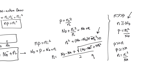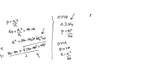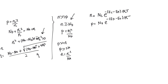Let's look at the expressions for carrier concentration obtained for intrinsic silicon, because they are still valid for doped silicon. We have N = Nc · e^(−(Ec − EF)/kT) and P = Nv · e^(−(EF − Ev)/kT). These relationships are valid for intrinsic silicon, doped silicon, as well as extrinsic silicon.